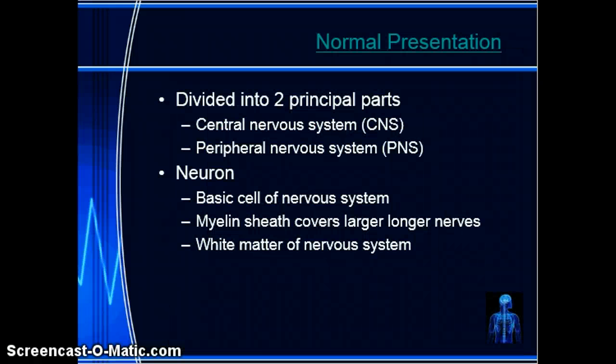With normal presentation, there are two principal parts: the central and peripheral nervous systems. The central nervous system is made up of your brain and spinal cord. The peripheral nervous system is made up of cranial and spinal nerves. They work together to receive an impulse, interpret it, and initiate a response — enabling the individual to maintain a high level of adaptation and homeostasis.